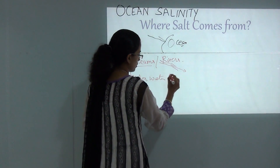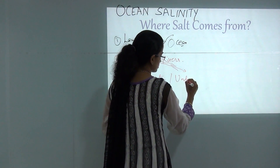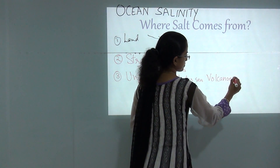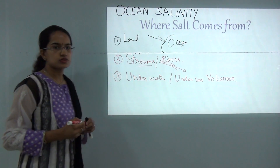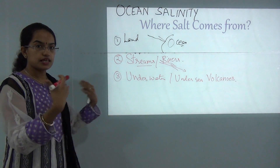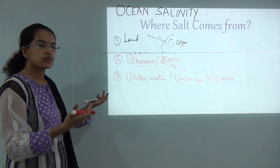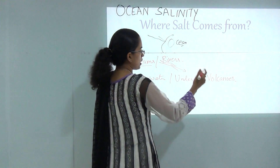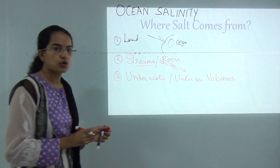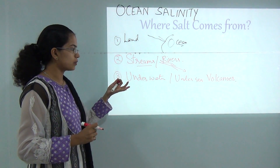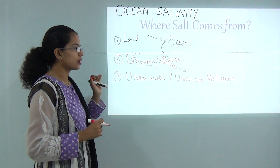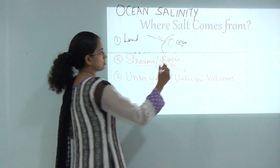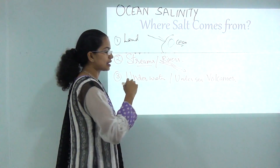You also have underwater, or I should say, undersea volcanoes. These undersea volcanoes erupt and when they erupt they bring out a lot of elements, mainly in the form of salts — magnesium and calcium salts that are usually coming out. So underwater volcanoes are one of the primary reasons for the salt in the ocean bodies.